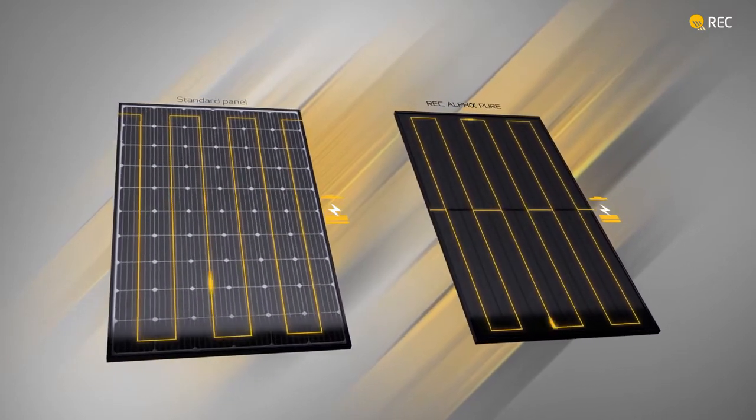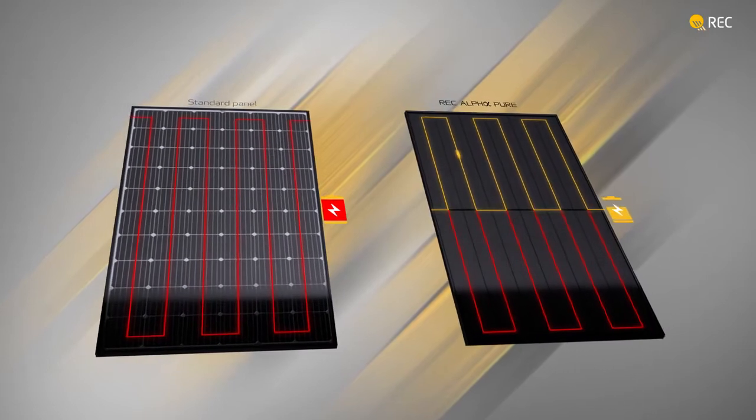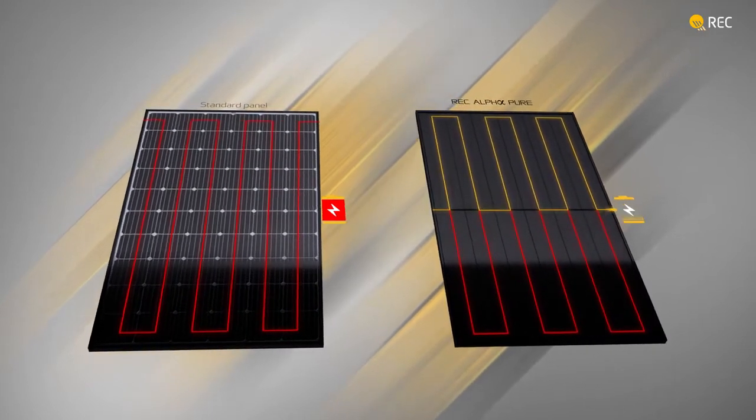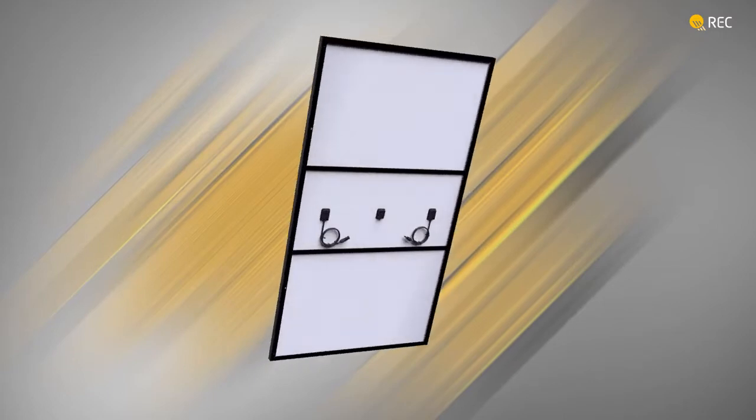Furthermore, if shade falls on an REC Alpha Pure panel, one half continues generating electricity even when the other half is shaded for a higher energy yield.